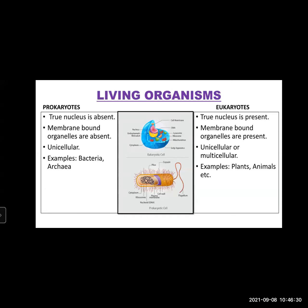The other one is eukaryotes. In eukaryotes, true nucleus is present. You can see in the picture also — in the eukaryotic cell, true nucleus is present. Then, membrane-bound organelles such as mitochondria and other organelles are present. These organisms may be unicellular or multicellular. Multicellular means the organism is made up of many cells, and many cells are responsible to carry out different life processes. Examples: plants, animals, human beings — we are all included in eukaryotes.